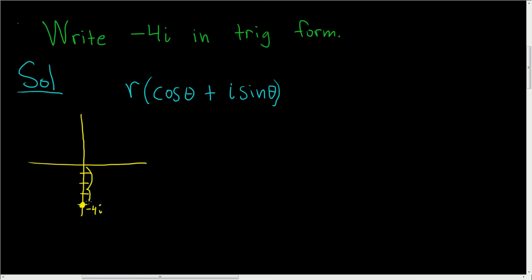r is this distance here. So r can be equal to 4. And theta is the angle. So this angle here is 3 pi over 2.